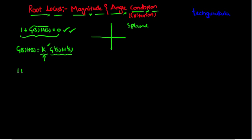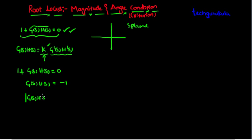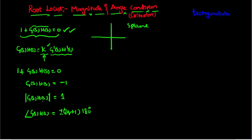If we rewrite the equation, G(s)·H(s) equals to minus 1. Taking the magnitude of G(s)·H(s), it equals 1. Taking the angle of G(s)·H(s), it equals plus or minus (2q+1) times 180 degrees.